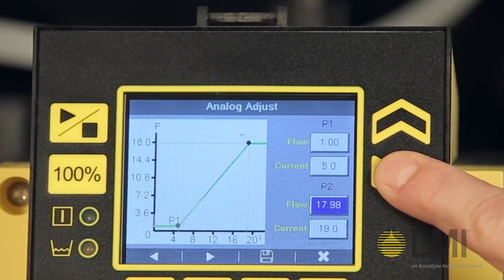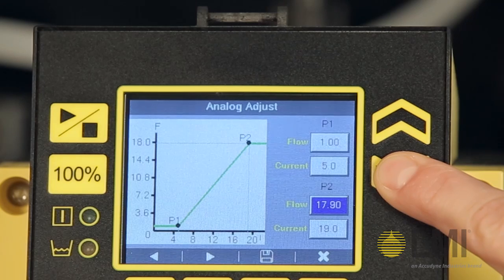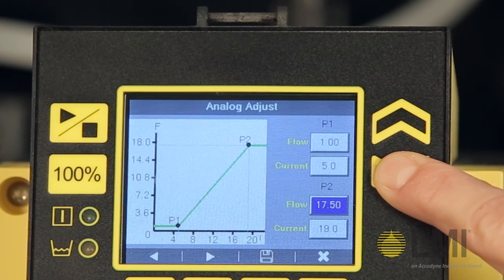Next, for point 2, let's adjust the pump to operate at 17 gallons per hour for signals of 19 milliamps or greater.